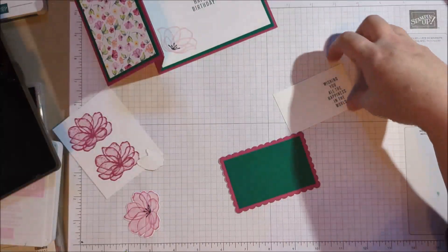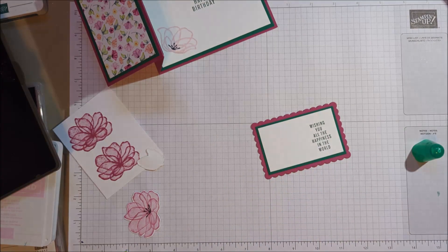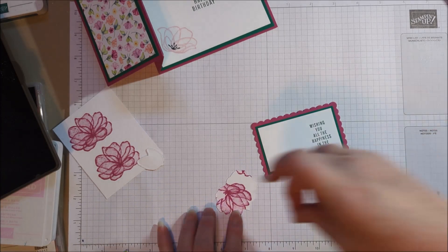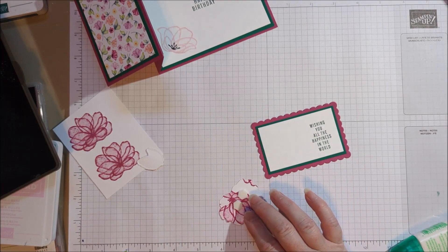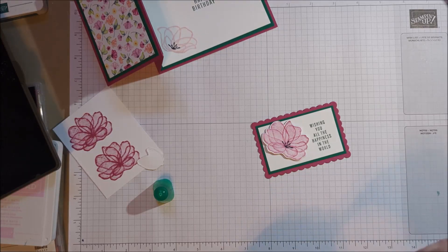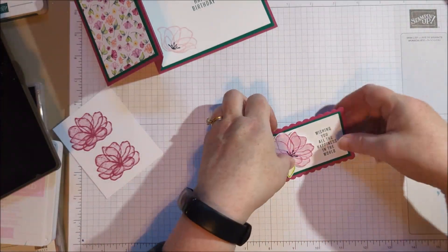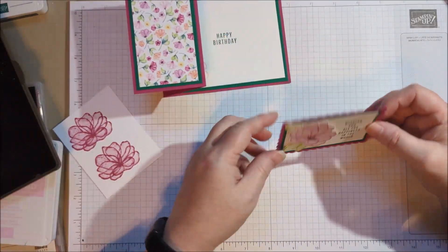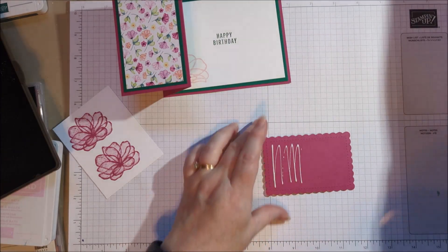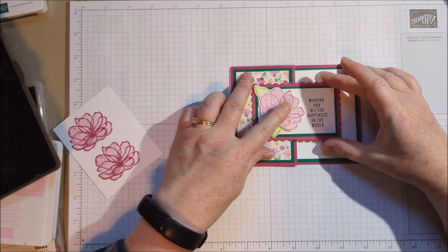Okay, now we're going to put it all together. I've got my sentiment down. I'm going to put the flower on a dimensional to pop it up a little bit. And then I'm going to tuck these leaves kind of behind. Now when you glue this down, you want to only put adhesive on the left side. So I'm going to flip it. And that way you don't accidentally glue your card completely shut.